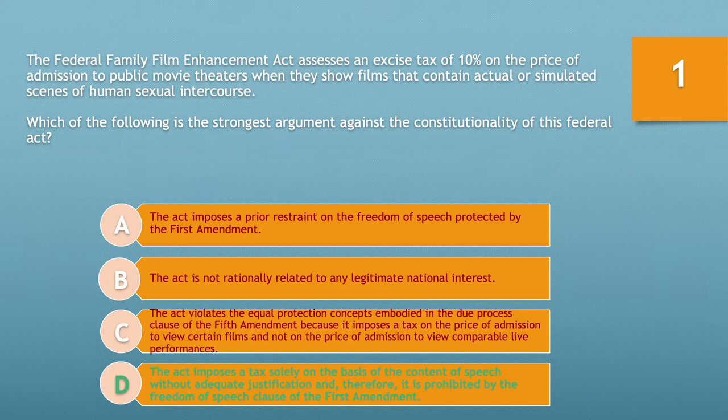The correct answer is D. The act imposes a tax solely on the basis of the content of speech without adequate justification and therefore it is prohibited by the Freedom of Speech Clause of the First Amendment. Congress shall make no law abridging the freedom of speech. For content-based restrictions to be valid, the restrictions must be narrowly tailored to achieve a compelling governmental interest — strict scrutiny.